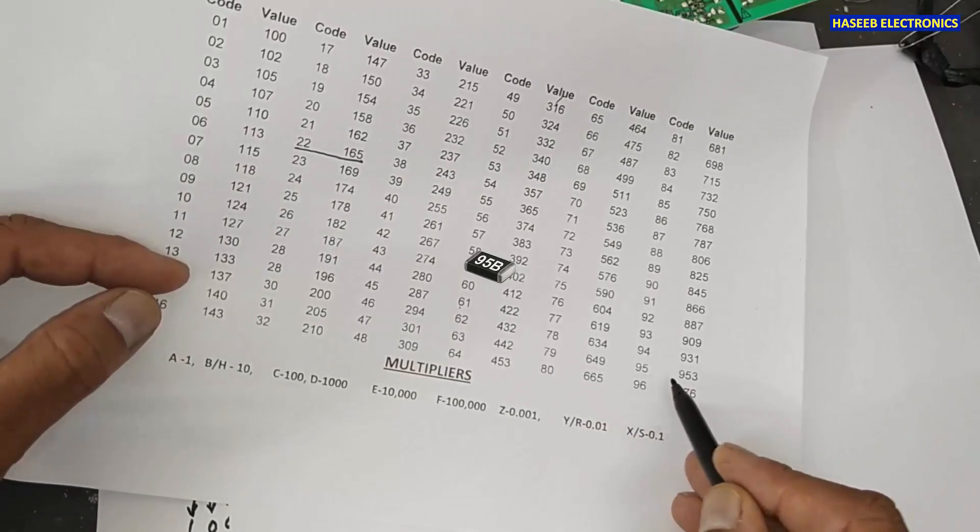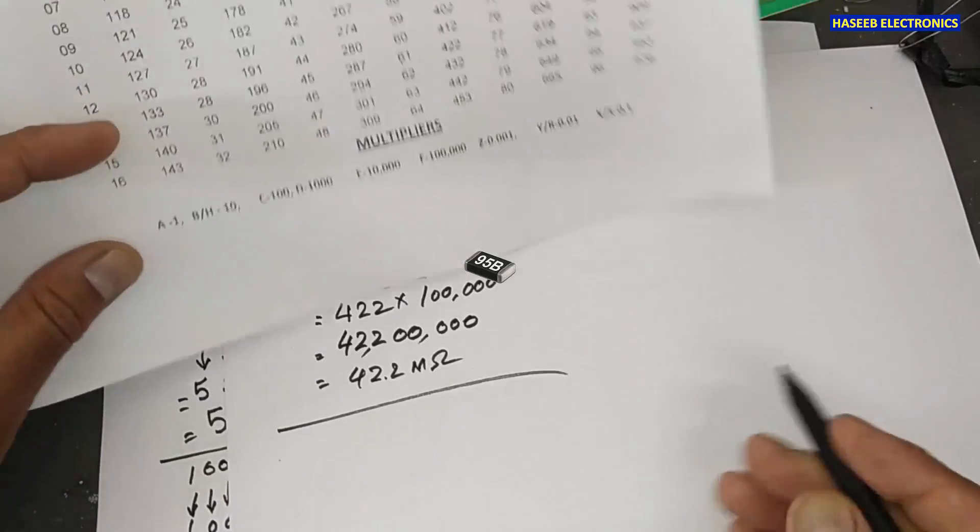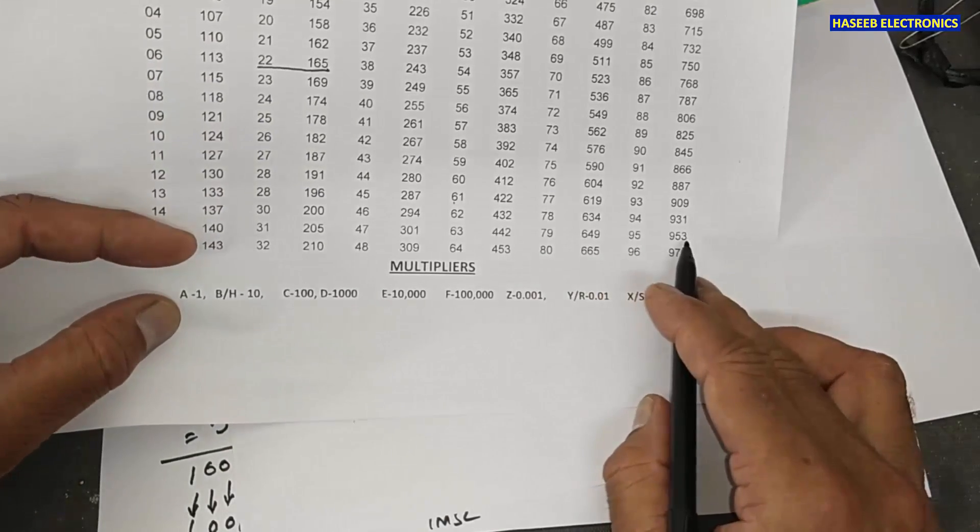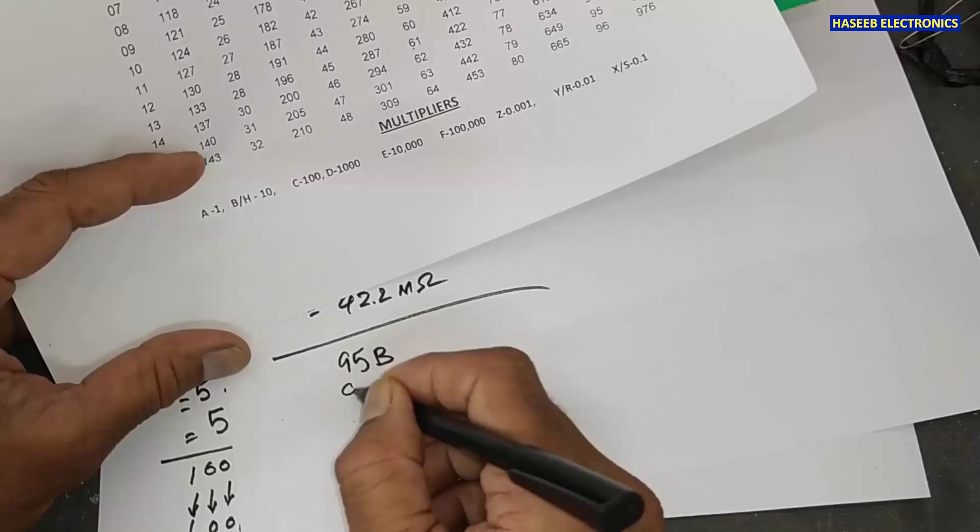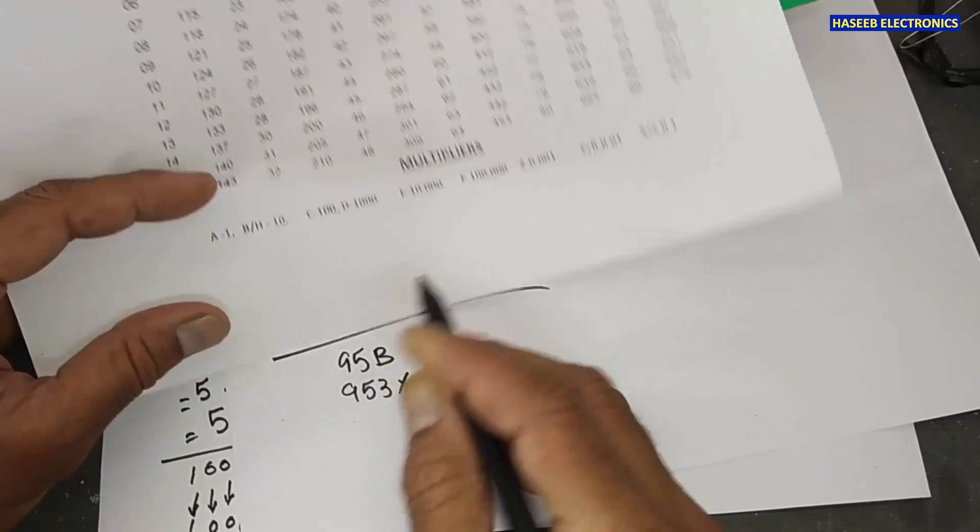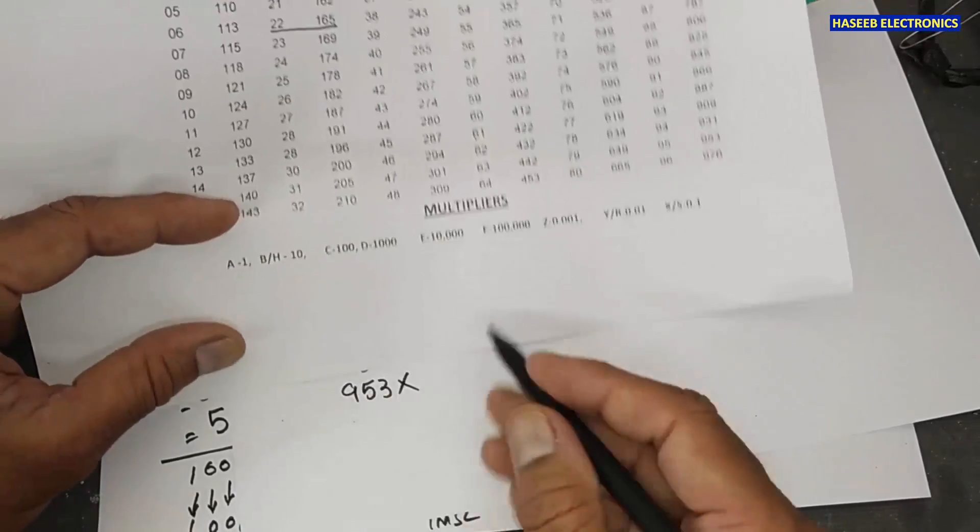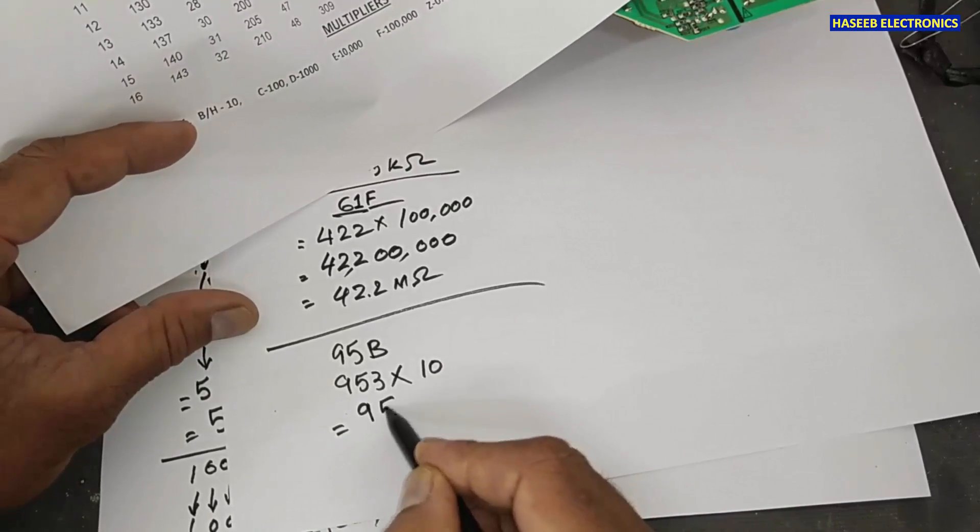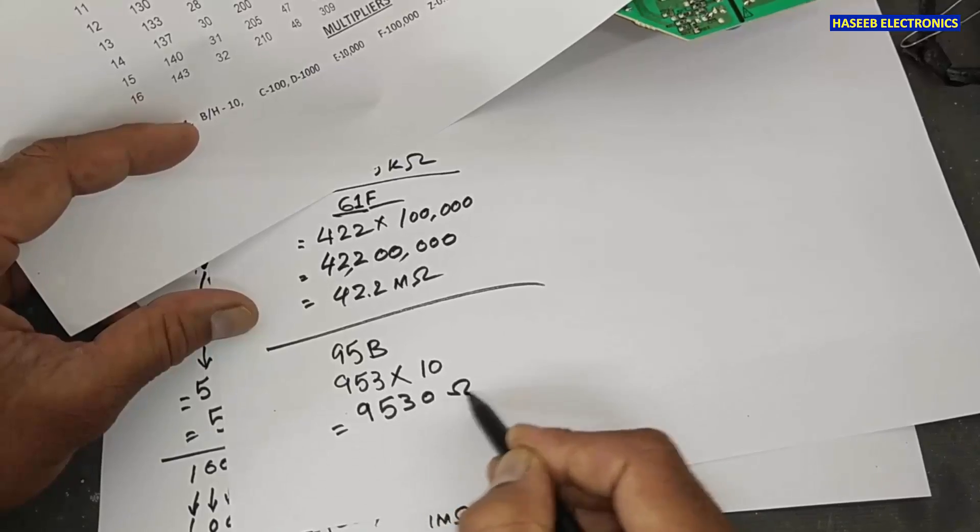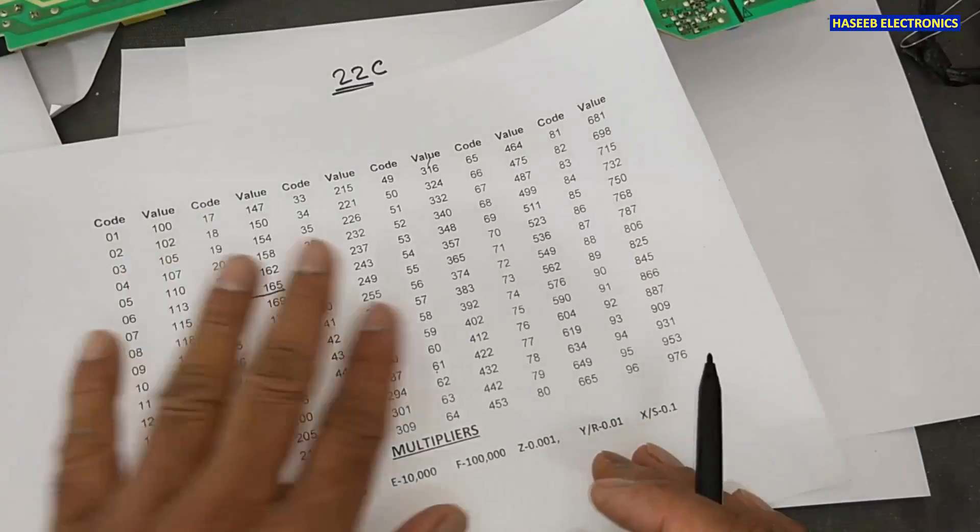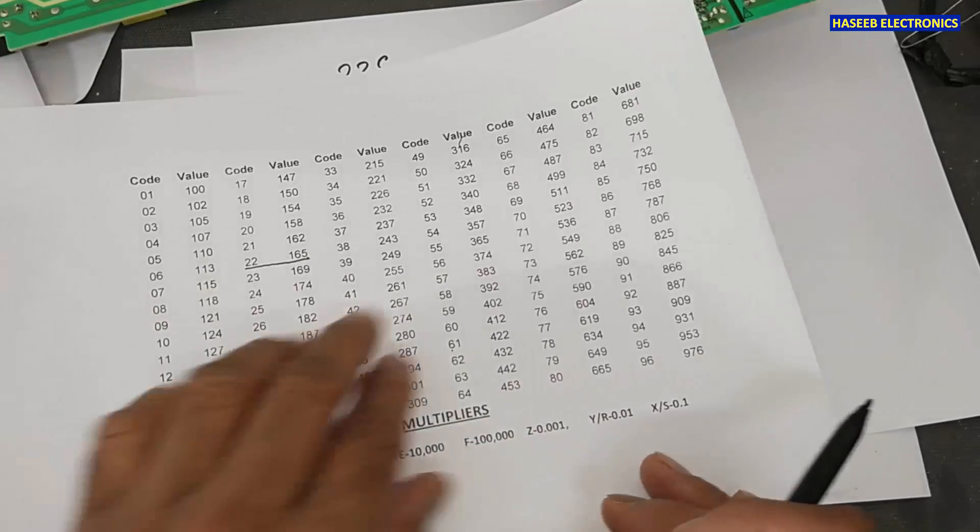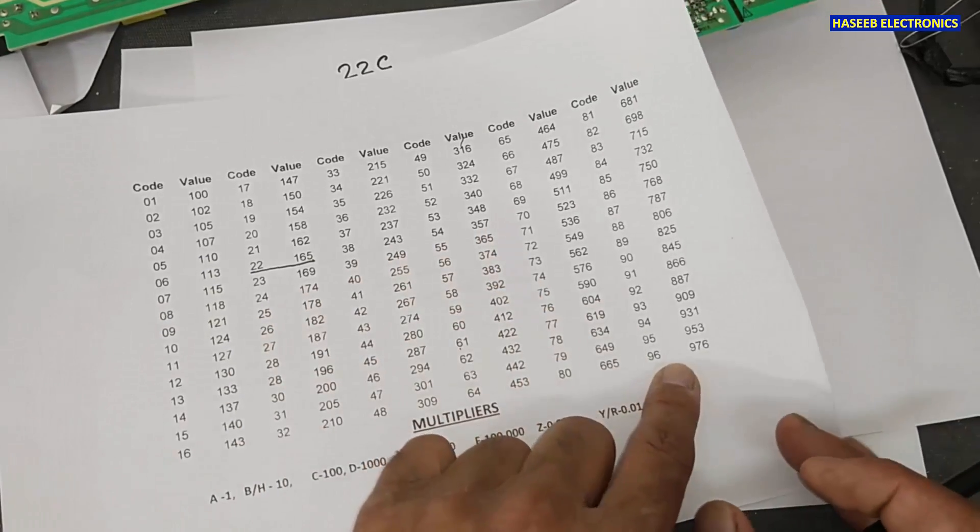If I have resistor 95B, that means 95, that is 953. And B is multiplier 10. That is 9530. So, it is EIA 96 resistor coding system. It has 96 resistor values.